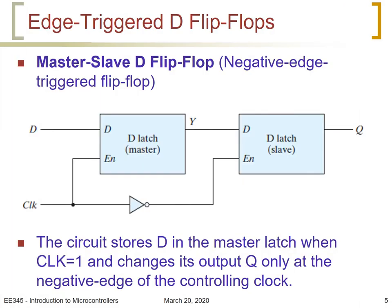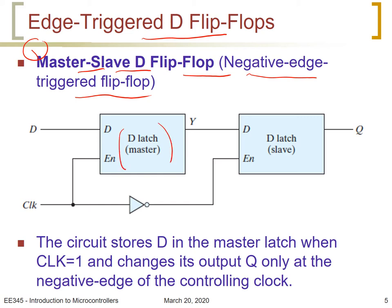Let us see how we design a flip-flop using the D latch studied earlier. There are basically two types of edge-triggered D flip-flops. The first is called the master-slave D flip-flop, also called the negative edge-triggered flip-flop. The flip-flop consists of two latches — one called the master and the other called the slave. Assume D is 0 and the clock is 0: the master is not enabled, but the slave is. When the clock goes to 1, the master is enabled and data is transferred to Y, so Y will be 0.